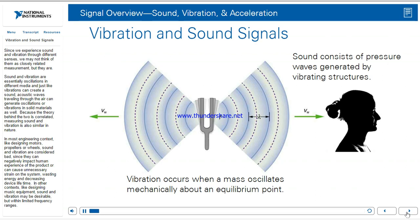Since we experience sound and vibration through different senses, we may not think of them as closely related measurements, but they are. Sound and vibration are essentially oscillations in different media. Just like vibrations can create sound, acoustic waves traveling through the air can generate oscillations or vibrations in solid materials as well. Because the theory behind the two is correlated, measuring sound and vibration is also similar in nature. In most engineering contexts, like designing motors, propellers, or wheels, sound and vibration are considered bad, since they can negatively impact human experience of the product or cause unnecessary strain on the system, wasting energy and decreasing device lifetime.